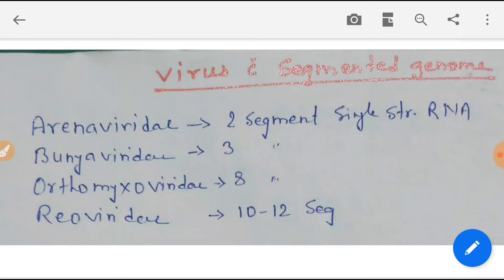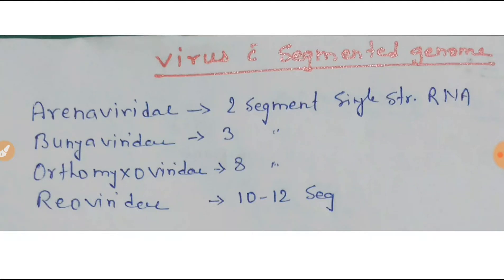Arenaviridae has two segmented single-stranded RNA. Next is Bunyaviridae with three segments. Orthomyxovirus has eight segments, and Reovirus has 10 to 12 segments.